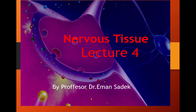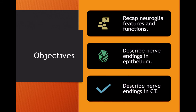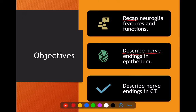This is a presentation for the fourth lecture in nervous tissue. In this lecture, our objectives are to recap the neuroglia features and functions, and to describe the nerve endings in the epithelium and the nerve endings in the connective tissue.